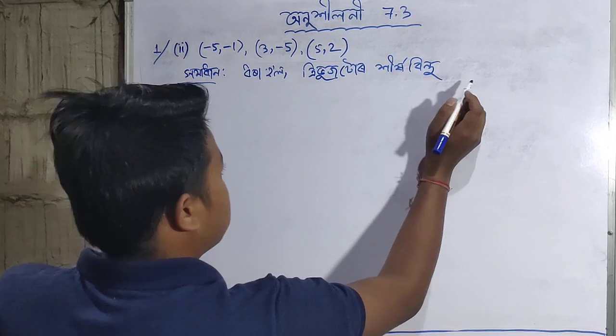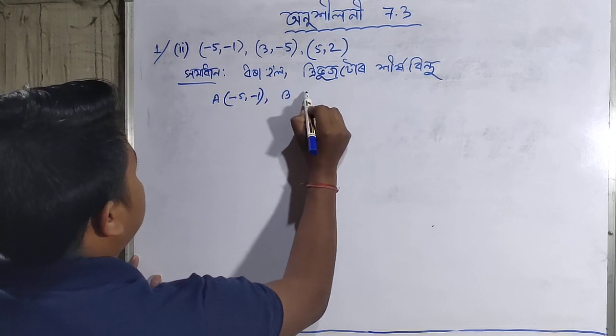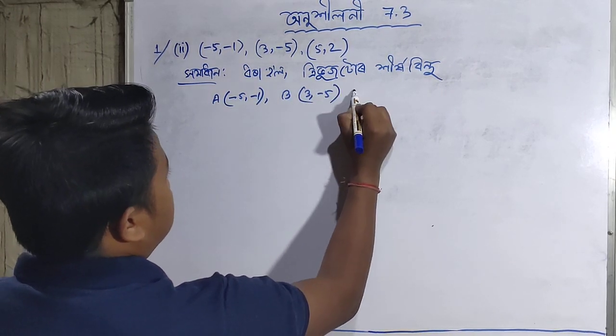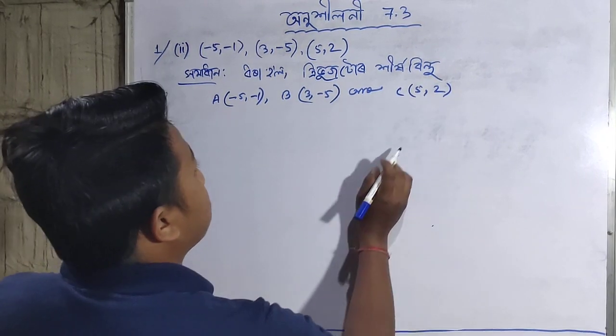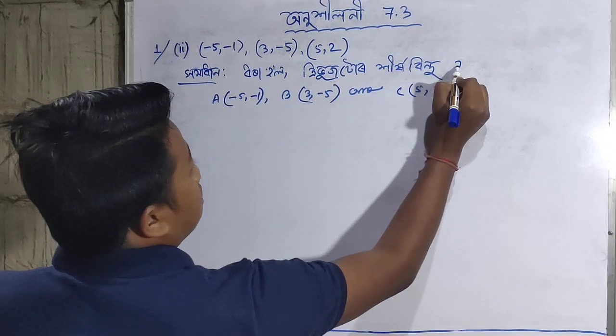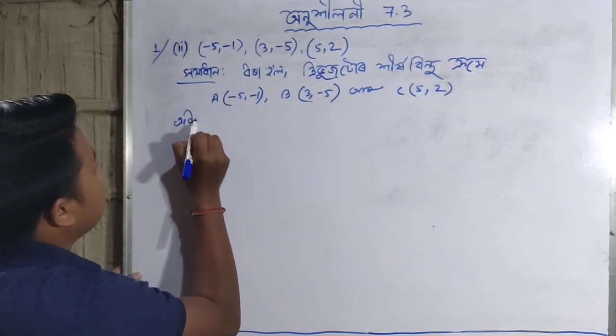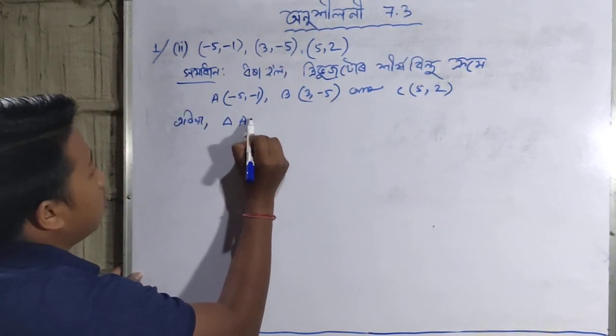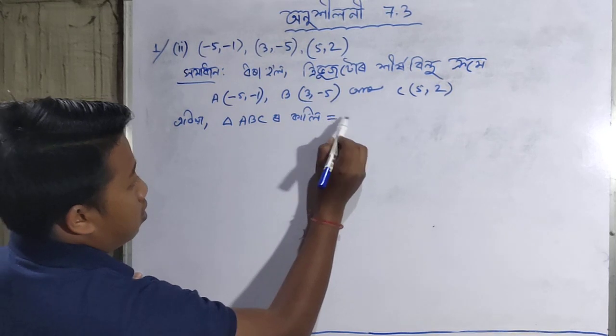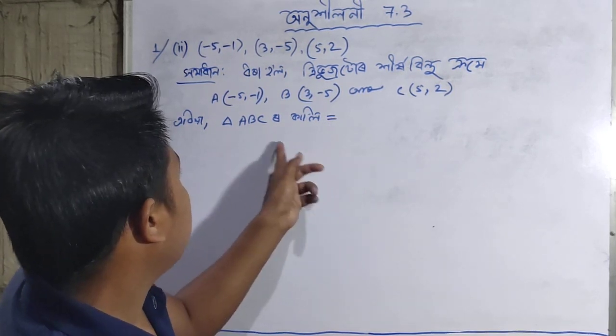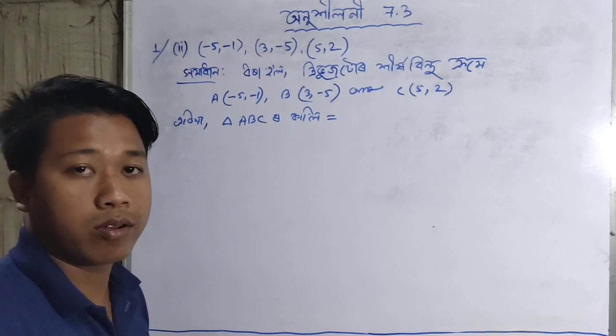The formula requires coordinates where the first point has x1, y1, the second has x2, y2, and the third has x3, y3. Let me set up the calculation. I'll link the introduction video in the description.